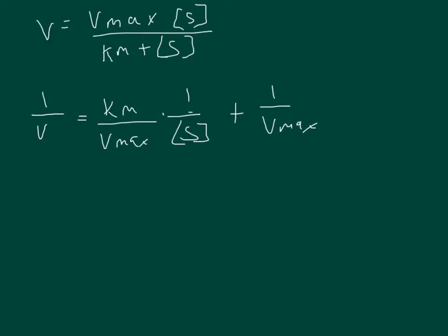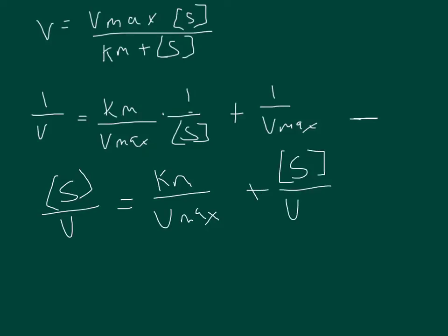So to derive the Hanes-Woolf we're going to start with the Lineweaver-Burk double reciprocal equation right here and we're going to multiply both sides by the substrate concentration. So what we get is the substrate concentration over the velocity is equal to Km over Vmax plus the substrate concentration over Vmax.